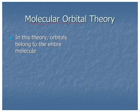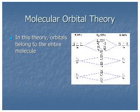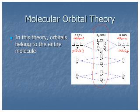I don't want to get too heavy-duty into this because it becomes a very advanced topic very quickly. But the idea of MO theory says the orbitals belong to the entire molecule. When we take the atomic orbitals — here are atomic orbitals from one of the oxygens, and here are the atomic orbitals from another oxygen — we overlap the orbitals to form the bond. The molecular orbitals in the middle are the orbitals that form when the atomic orbitals overlap, and they belong now to the whole diatomic oxygen molecule.